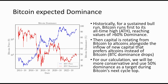Historically, for a sustained bull run, usually Bitcoin runs first to its all-time high, reaching values of more than 60% dominance. Then capital rotates from Bitcoin to altcoins, alongside inflows of new capital that prefers altcoins instead of Bitcoin, and you will see that the Bitcoin dominance drops. The Bitcoin dominance is the red line, and the Bitcoin price is the blue line. For our calculation, we will be more conservative and use 50% dominance as the target during Bitcoin's next cycle top.